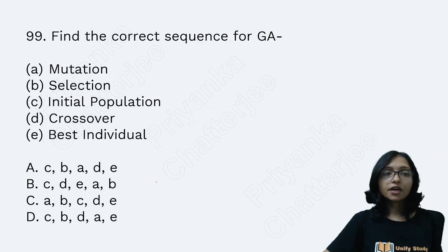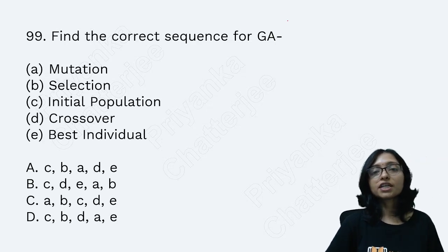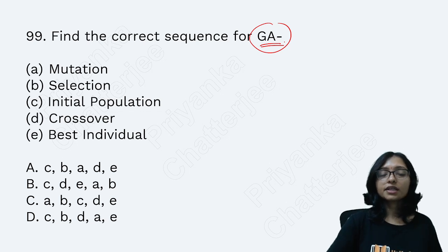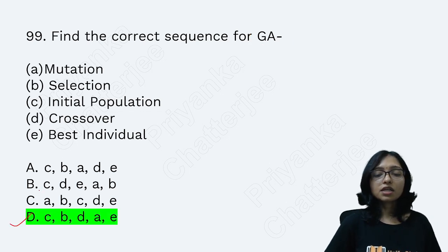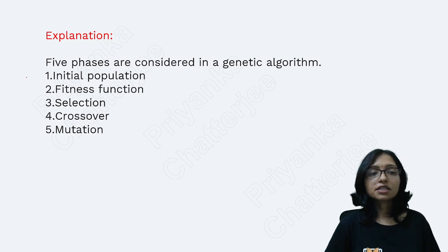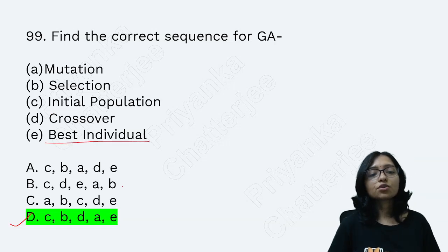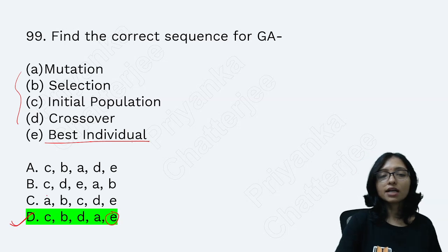Find the correct sequence of the genetic algorithm — a very popular question nowadays. The correct sequence is: initial population → fitness evaluation → selection → crossover → mutation → best individual. The best individual comes last in this sequence, which is the most preferable order.